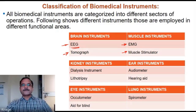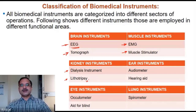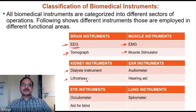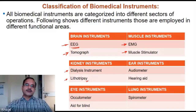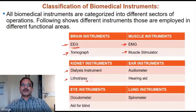Kidney instruments include dialysis and lithotripsy. Lithotripsy is a technique that uses either a laser beam or an electrical signal to destroy or break kidney stones into smaller pieces. It is used when someone has a kidney stone problem to dissolve those stones.